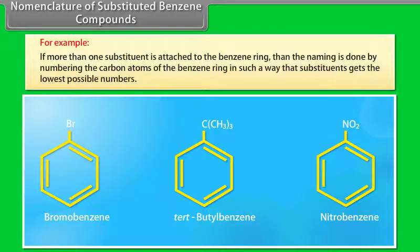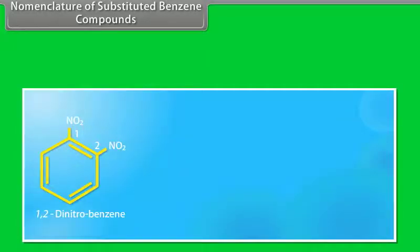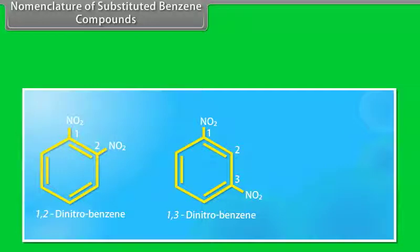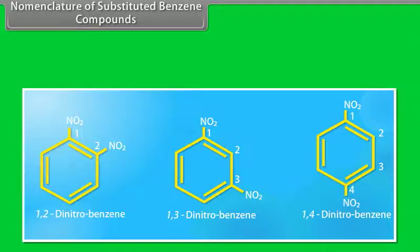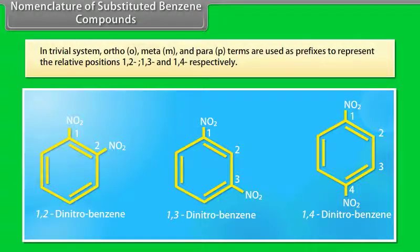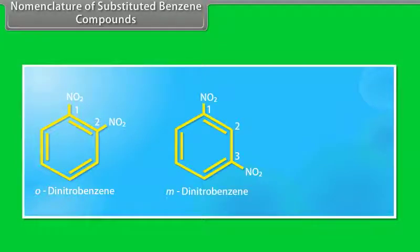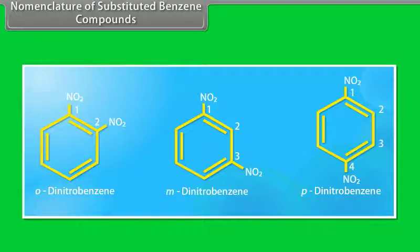If more than one substituent is attached to the benzene ring, numbering is done so that substituents get the lowest possible numbers. For example: 1,2-dinitrobenzene; 1,3-dinitrobenzene; 1,4-dinitrobenzene. In the trivial system, ortho (o), meta (m), and para (p) terms are used as prefixes to represent relative positions 1,2; 1,3; and 1,4 respectively — for example, ortho-dinitrobenzene, meta-dinitrobenzene, para-dinitrobenzene.